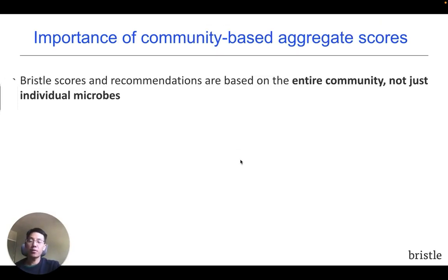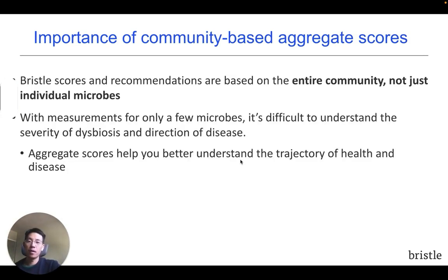In summary, Bristle scores are based on the entire community and not just a small subset of individual microbes. The measurements of just a few microbes are often insufficient to help you understand the severity of dysbiosis or the direction of disease, while these scores help you understand the trajectory of health and disease.